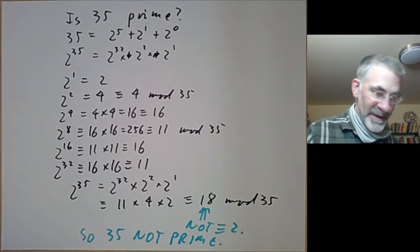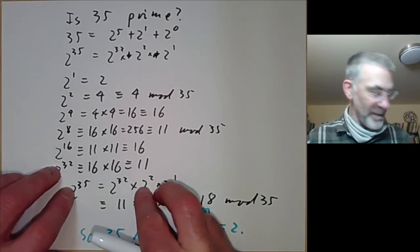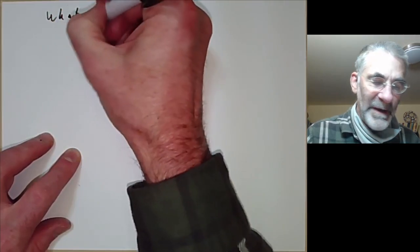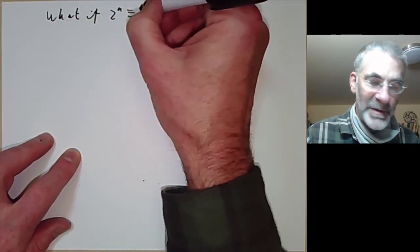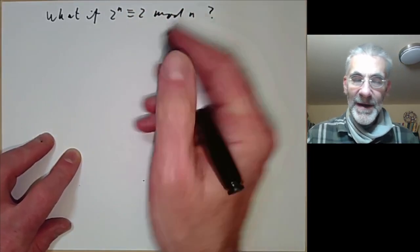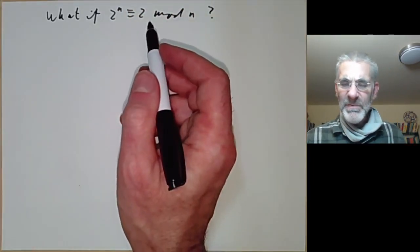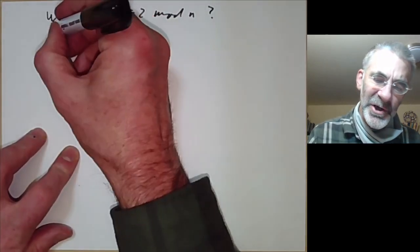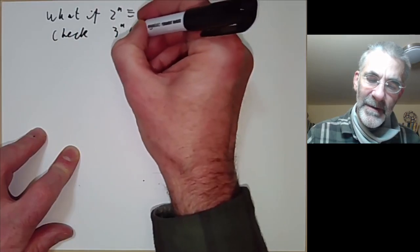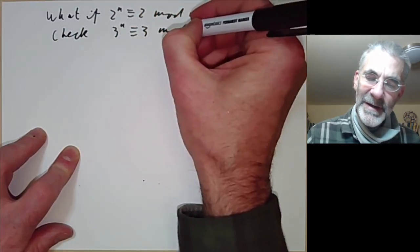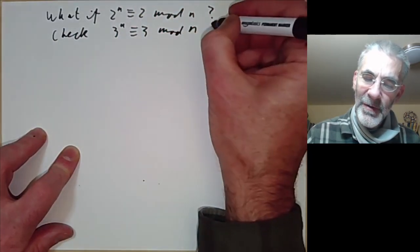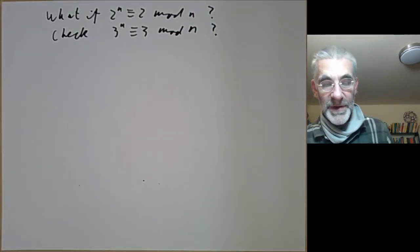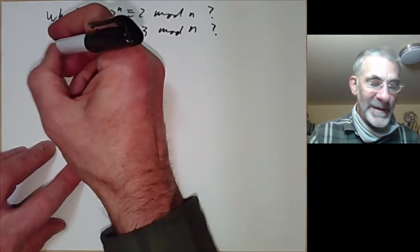Well, the other problem we have to deal with is, what happens, what if 2 to the n is equivalent to 2 modulo n? And here we could say that this is some evidence that n is prime. So what do we do? Well, we could also check whether 3 to the n is equivalent to 3 modulo n. And we could try several other numbers. So this suggests the following question. Can we have a to the n is equivalent to a mod n, even if n is not prime, for all a?